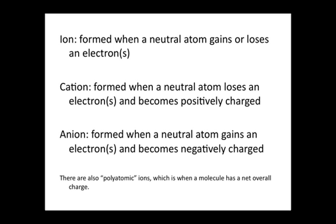Ions are formed when a neutral atom either gains or loses electrons. If a neutral atom loses electrons, it loses negative charge and becomes a positively charged ion, which we call a cation.